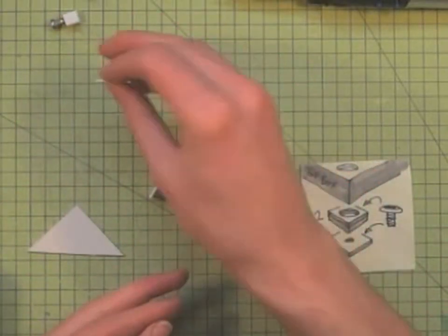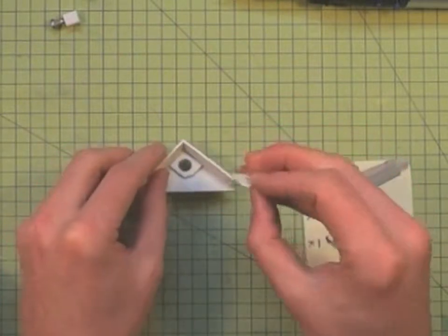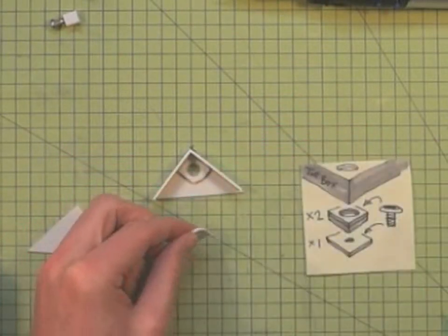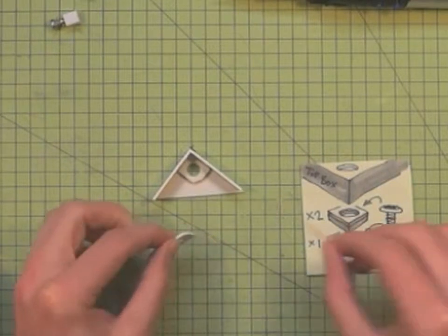So the next bit is obviously to make sure that the screw sits at the bottom of it. And so we'll want to just glue a smaller piece into the bottom.